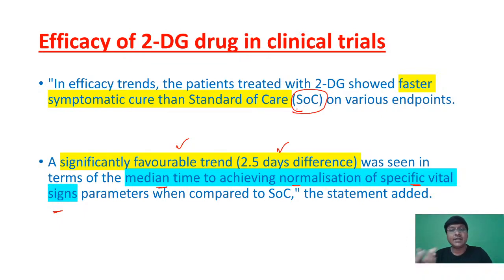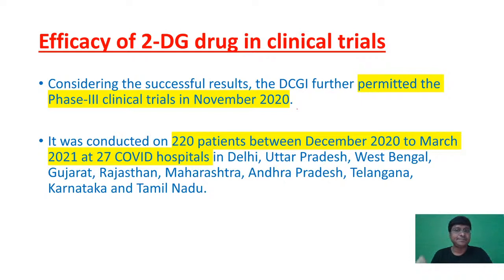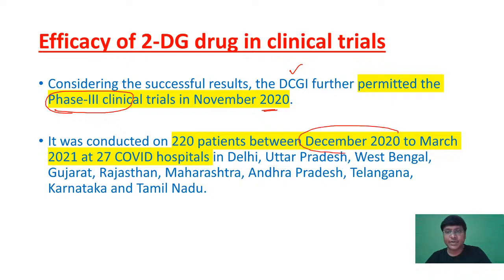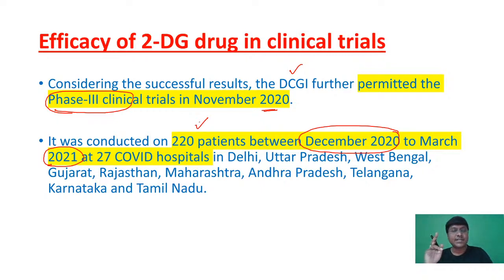The drug was found to be very much more efficacious compared to standard of care. With this data, they went to the DCGI, which permitted Phase 3 trials in November 2020. Phase 3 trials were conducted from December 2020 to March 2021 on 220 patients — exactly double the Phase 2 trial count of 110 patients.